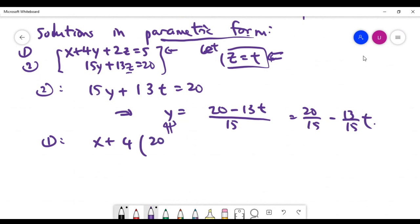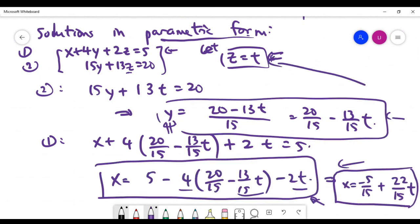The fact is that we can use the first equation, and x plus 4 times open bracket 20 divided by 15 minus 13 over 15 times t, plus 2z, z is actually t, equals 5. And of course you can do some arithmetic yourself, so actually we can write the x in a slightly simplified way. So it means what it means, all our answers now in terms of the parameter t.